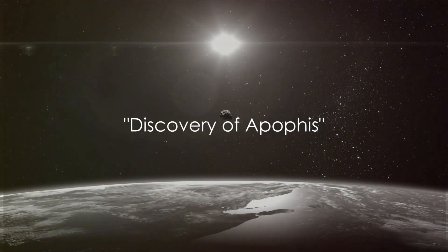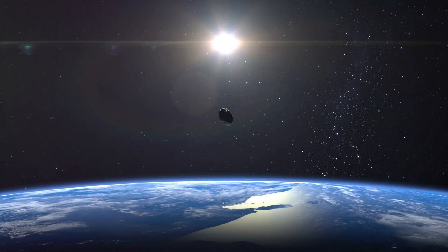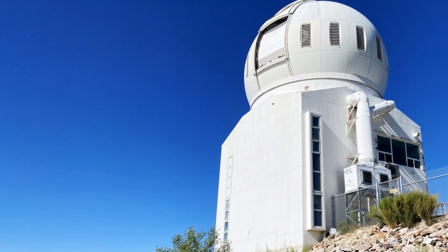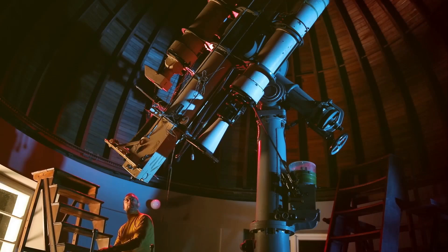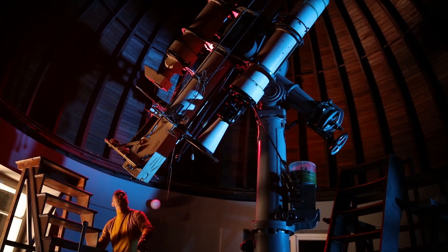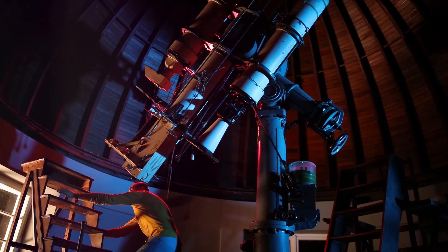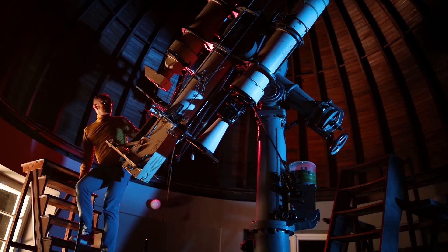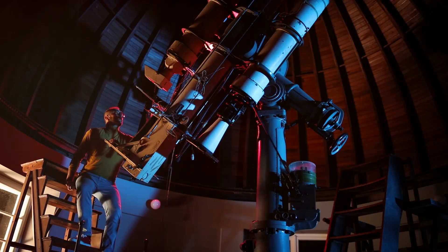On June 19, 2004, astronomers discovered an asteroid that would soon become a household name. It was a day like any other at the Kitt Peak National Observatory in Arizona. The telescopes were trained on the heavens, capturing cosmic phenomena far beyond our earthly realm. But on this particular day, something unusual caught the eye of Roy A. Tucker, David J. Tholen, and Fabrizio Bernardi, our three astronomy musketeers.